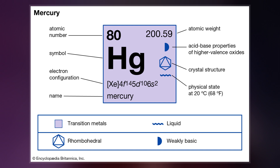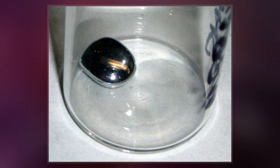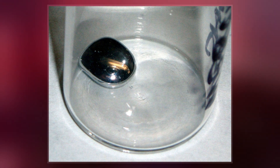Mercury is used in thermometers, barometers, manometers, sphygmomanometers, float valves, mercury switches, mercury relays, fluorescent lamps, and other devices.